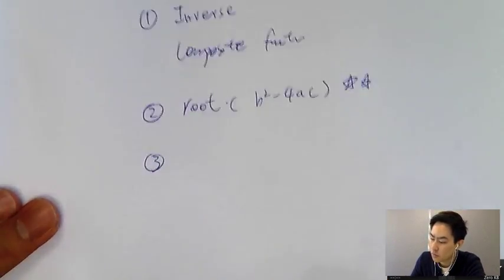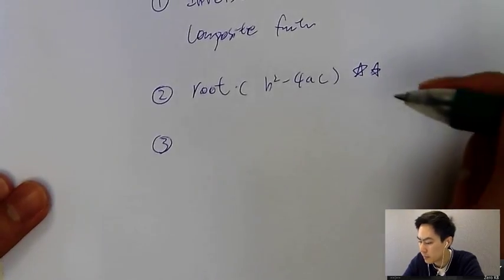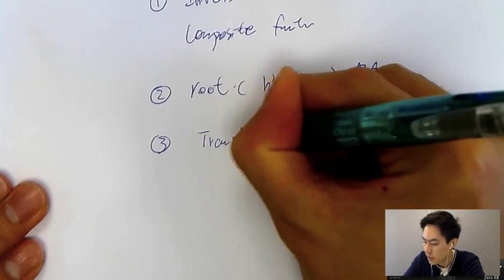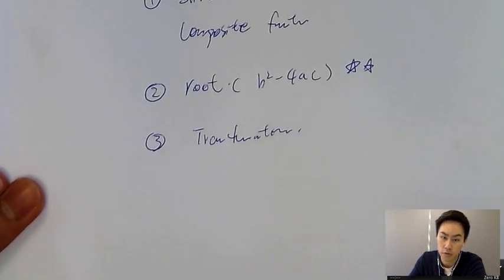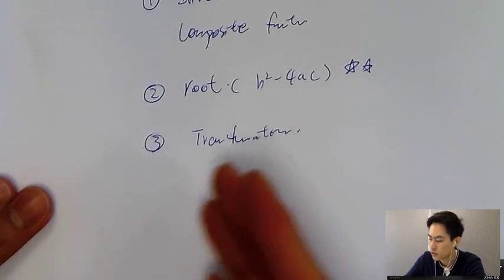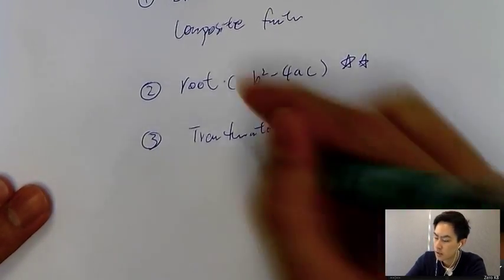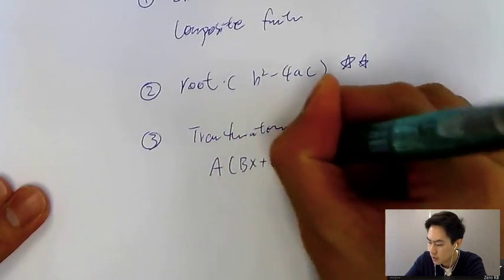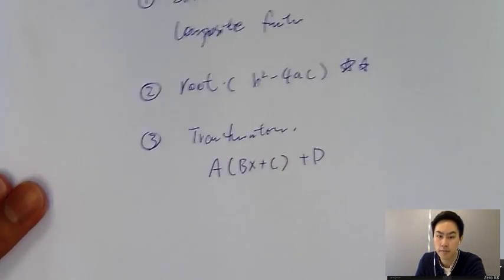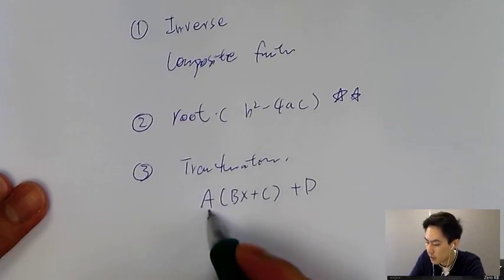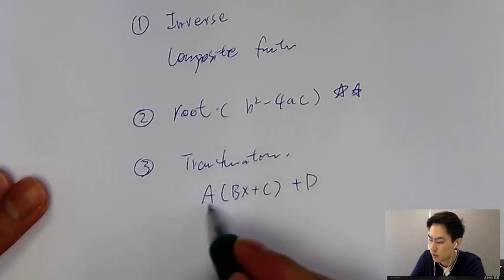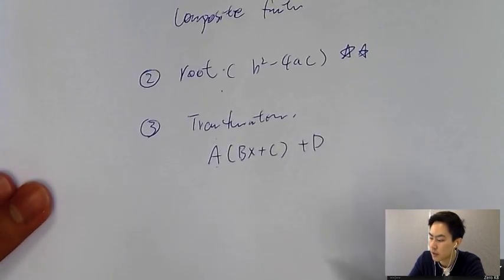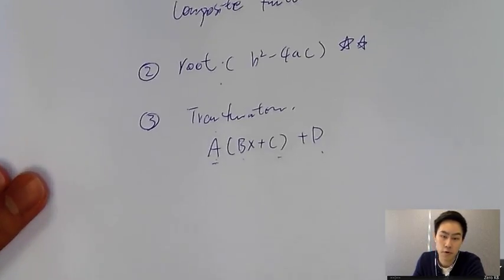The third type is transformation — about moving the graph. So how do you shift and extend the graph? It follows the form a·f(bx + c) + d. In my trial lesson, you can choose either transformation or inverse function and I'll explain all the concepts.